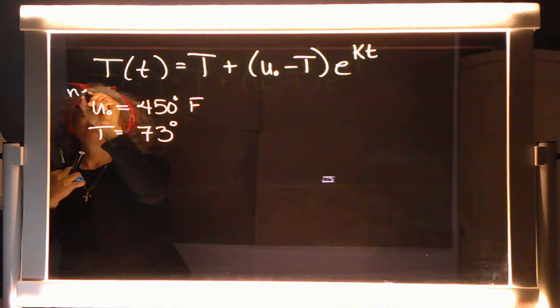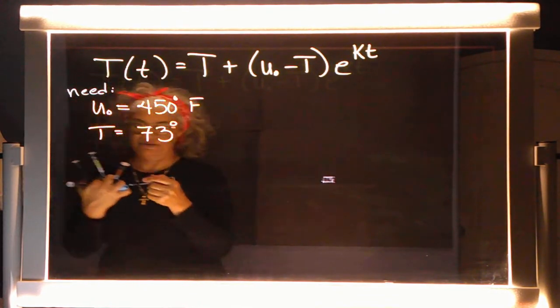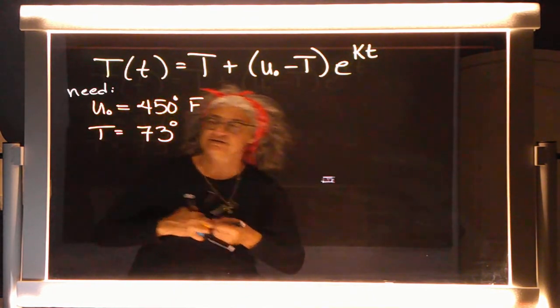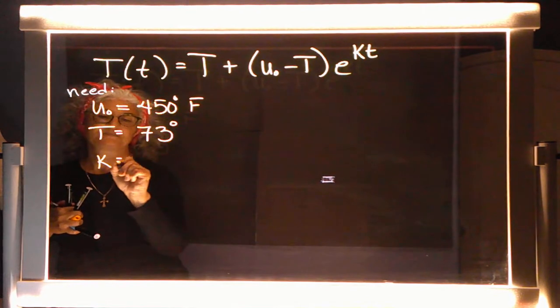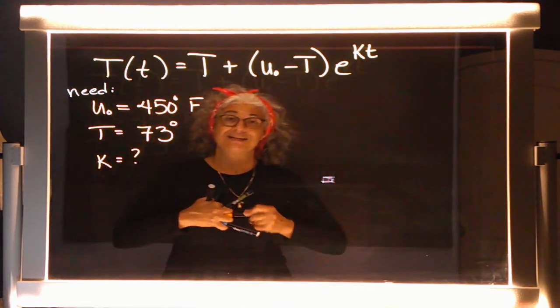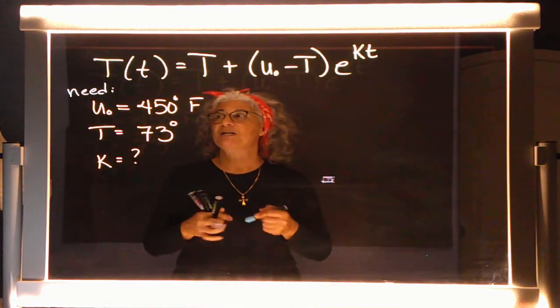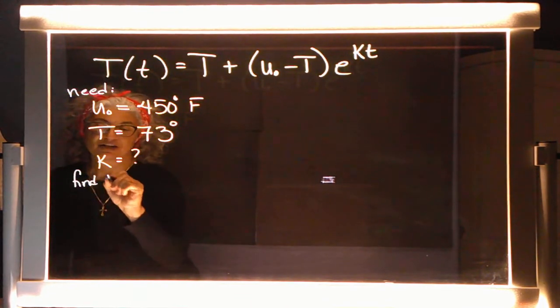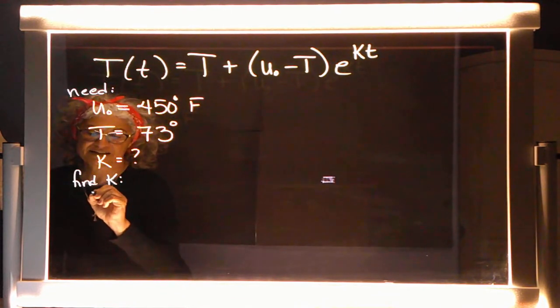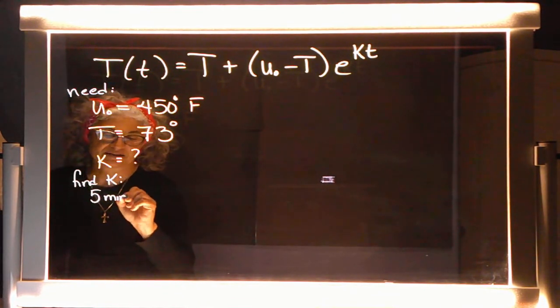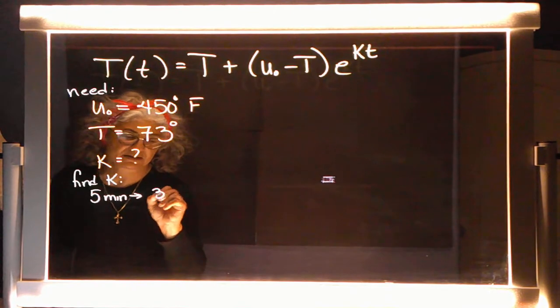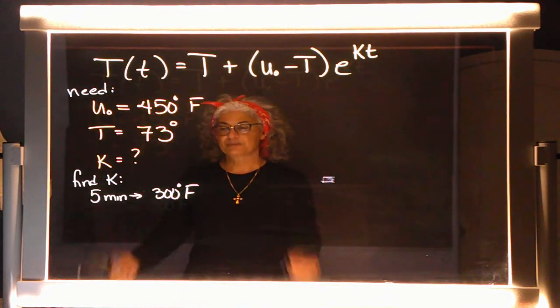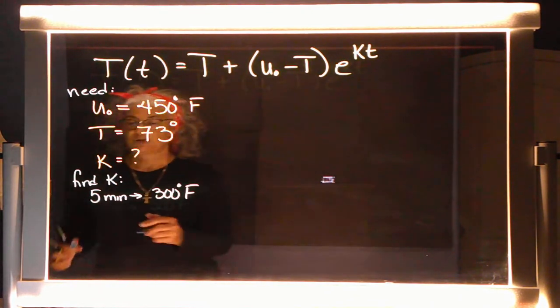In this case, gratefully, I have two out of the three. The third thing I don't have, which, no surprise, is I don't have the K. Well, I've got to go find K. You with me? So the way we're going to find K is we're going to use that last piece of information that says after five minutes, the temperature of the pizza is now 300 degrees Fahrenheit. Now, I can start plugging things in.